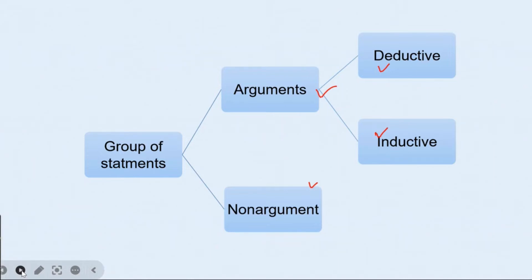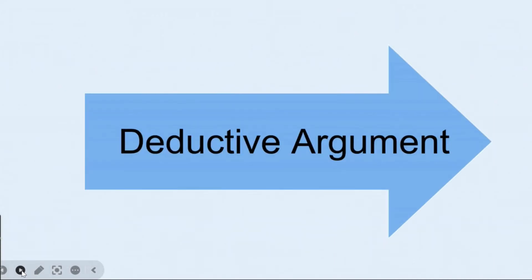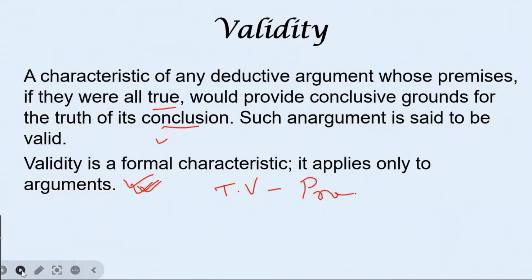A group of statements can be an argument, or it can be a non-argument — in the form of a belief, an opinion, or an explanation. For something to be an argument, we need two things: the premises and a conclusion that is based on those premises. Arguments are of two types: deductive and inductive, which we have already discussed.